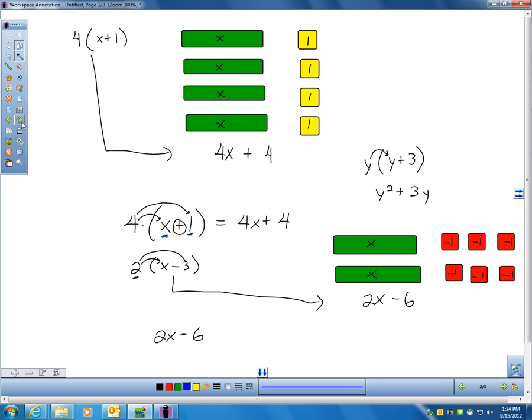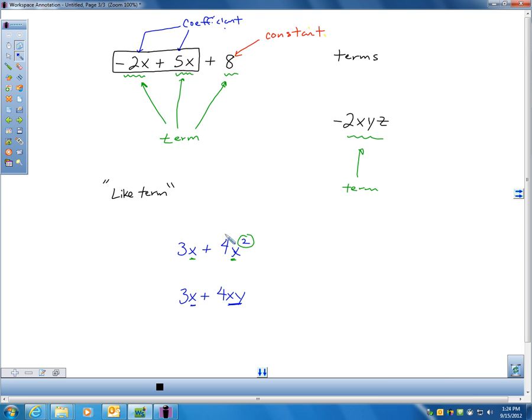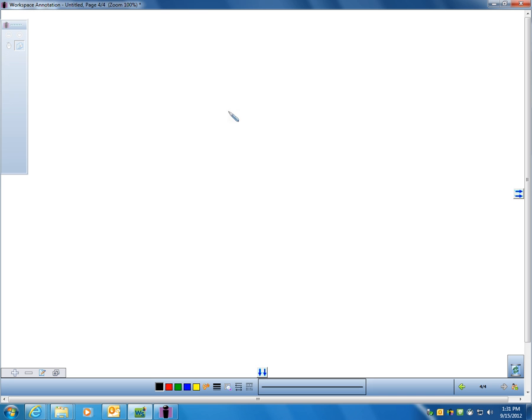And finally, on page 99, on the bottom, numbers 28 to 39, they are going to have you practice simplifying expressions. Maybe I should just do one with you or two just to make sure that you're okay with this. Let's say we have something like number 33. 33 says 6r plus 2 times r plus 4. So here's the first thing I'm going to underline.